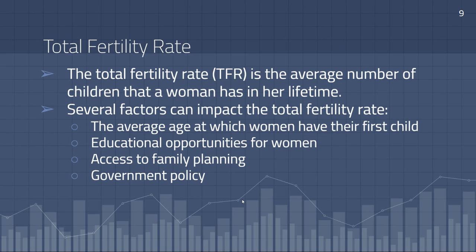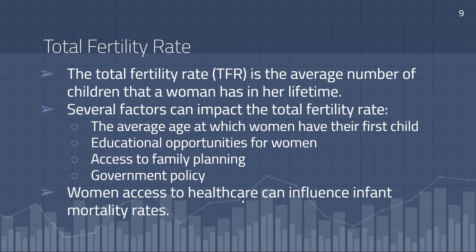Government policy can also impact the total fertility rate — for example, China's one child policy limited family size. Additionally, women's access to health care can influence infant mortality rates. When women have access to health care facilities, they and their children are more likely to be healthy. Women without access to such facilities often live in countries with a higher infant mortality rate.